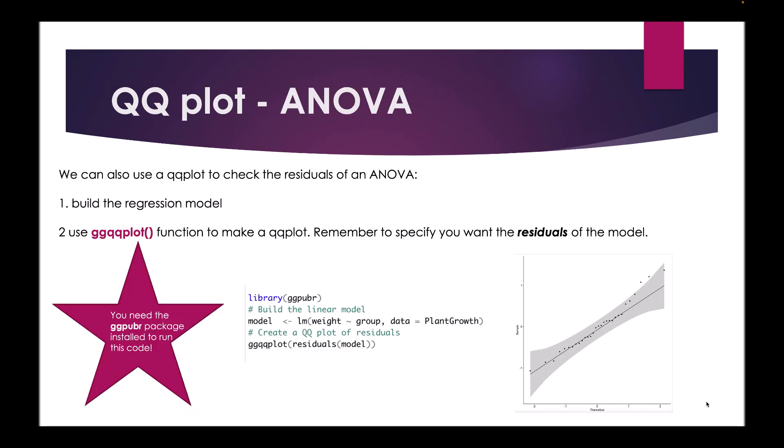We can also use QQ plots to check the residuals of an ANOVA for normal distribution. We can do this using the ggqqplot function from the ggpubr package. Previously I showed how to make a QQ plot using base R, and here I'm going to show you how to make one using the ggpubr package just to show a different way that you can do things.